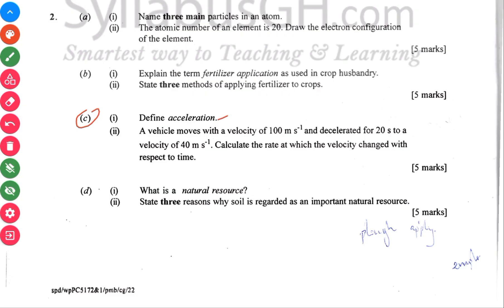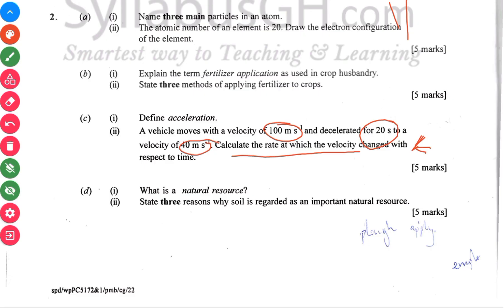A vehicle moves with a velocity of 100 meters per second, then decelerates for 20 seconds. The initial velocity is 100 meters per second. Calculate the rate at which the velocity changes with respect to time — you're being asked to find the deceleration, because the initial velocity was 100 m/s and it decelerated to 40 m/s in 20 seconds. The car is slowing down, so you are expected to get a negative answer when calculating acceleration.